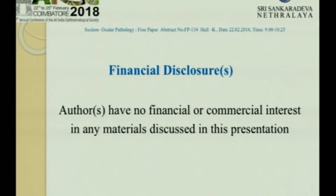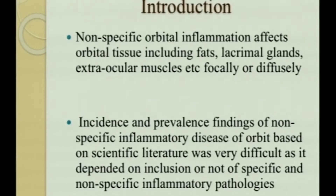I do not have any financial or commercial interest in any of the material discussed in this presentation. Non-specific orbital inflammation affects the orbital tissue including fats, lacrimal glands, and extraocular muscle, focally or diffusely. Incidence and prevalence of non-specific inflammatory disease of orbit based on scientific literature was very difficult as it is dependent on inclusion of specific and non-specific inflammatory pathologies.